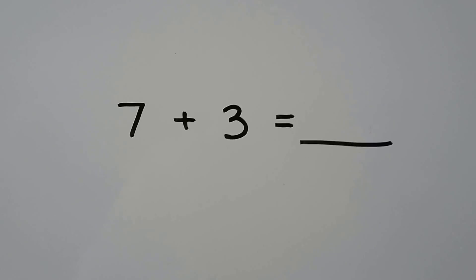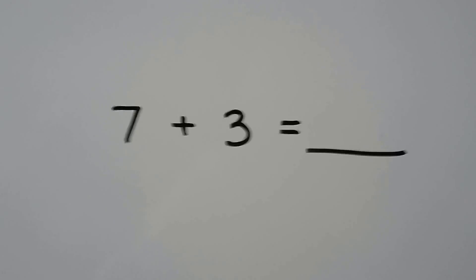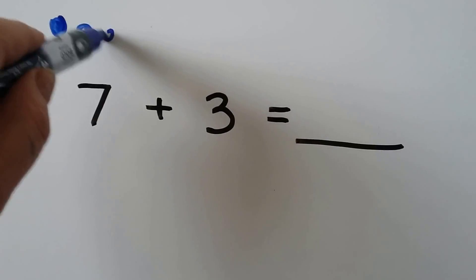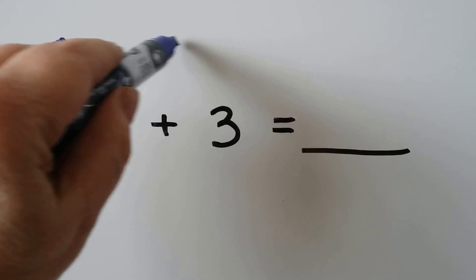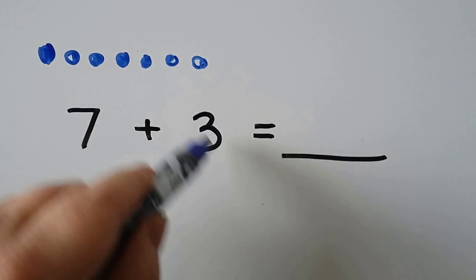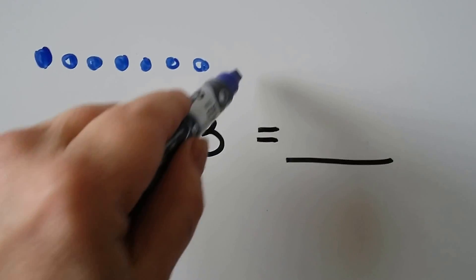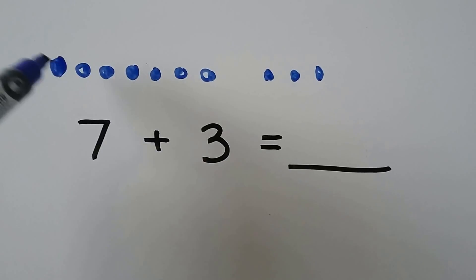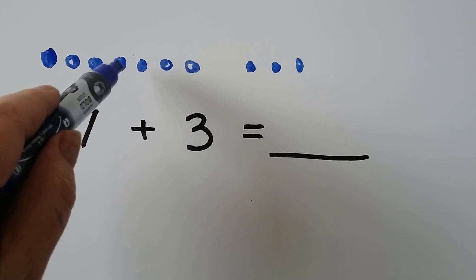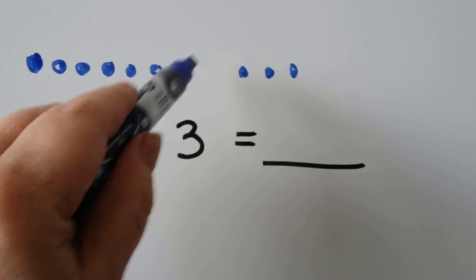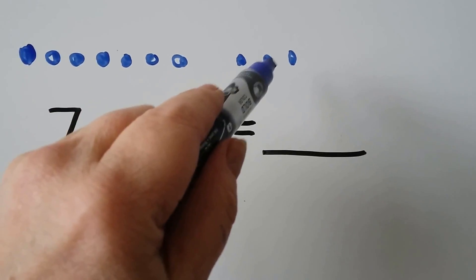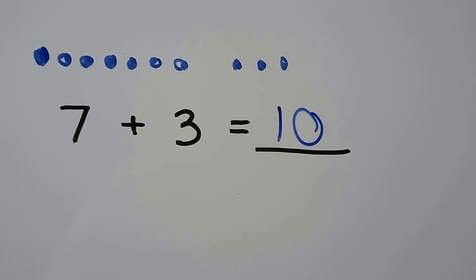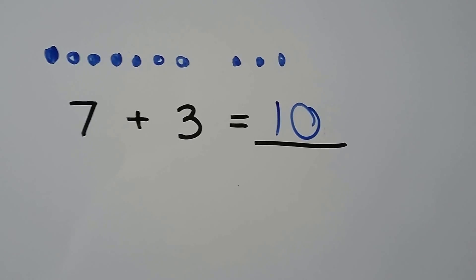Seven plus three. We can use dots. One, two, three, four, five, six, seven, plus three: one, two, three. Counting all together: one, two, three, four, five, six, seven, eight, nine, ten. Seven plus three is equal to ten.